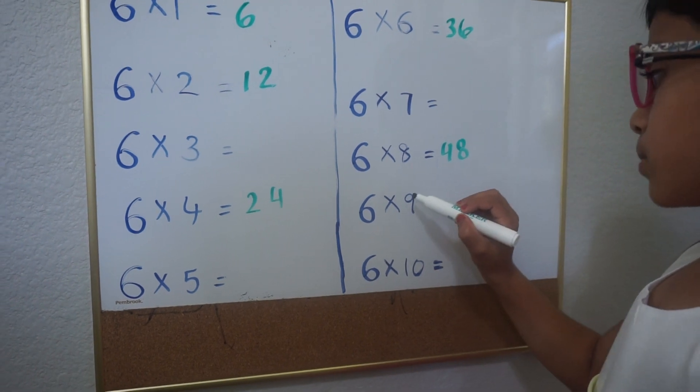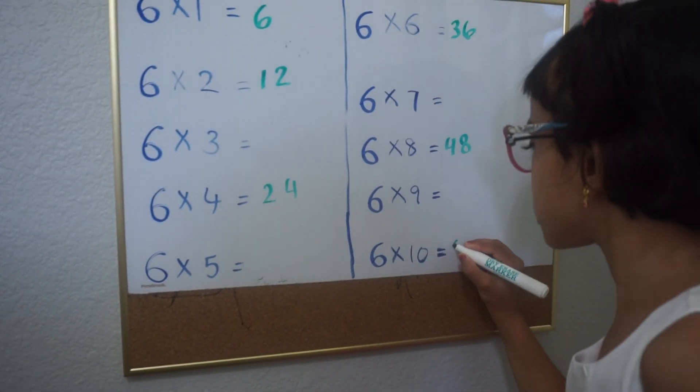So you skip this one because it's an odd number. And then 6 times 10 is 60.